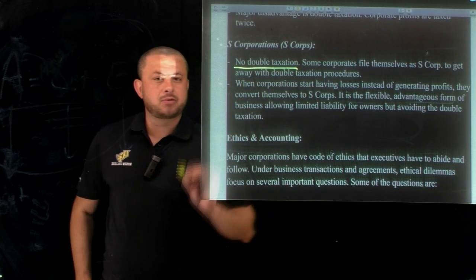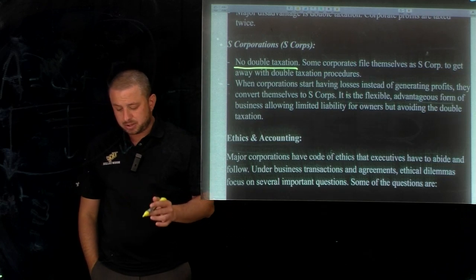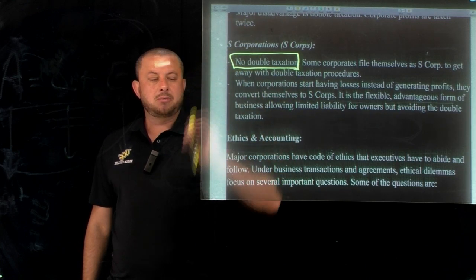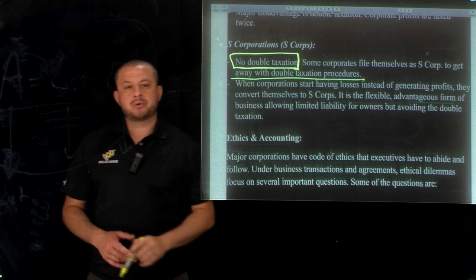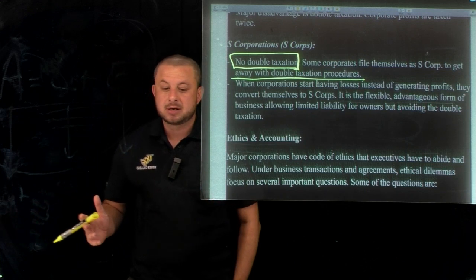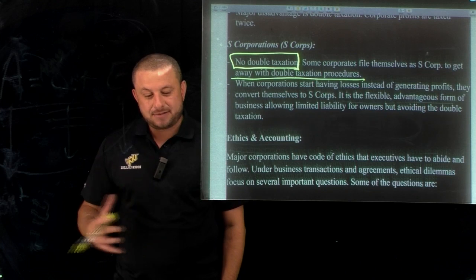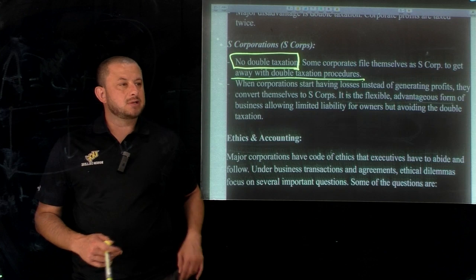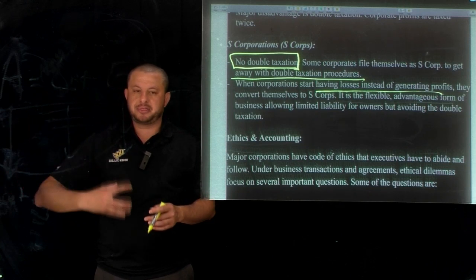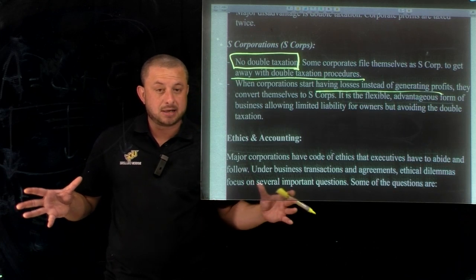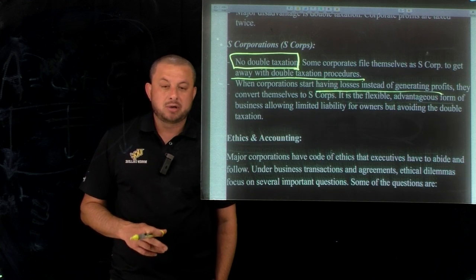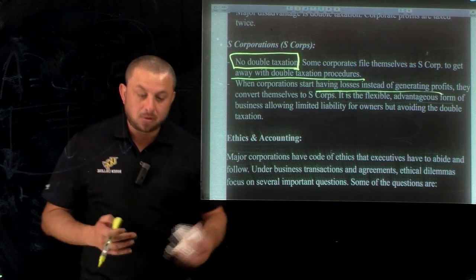S corporations are a different type of corporation with no double taxation. Advantages and disadvantages are similar to regular corporations but with major differences. Sometimes companies convert to S-corps to avoid double taxation — for example, if a company starts having losses or fears bankruptcy, converting to an S-corp allows them to avoid double tax and use that money to repay outstanding loans during debt restructuring.